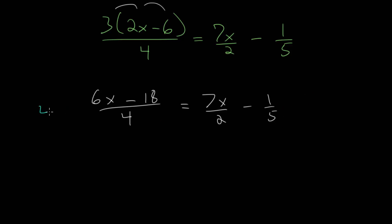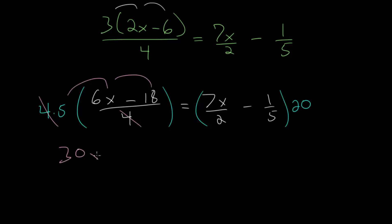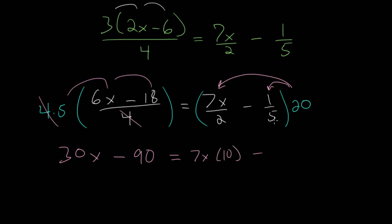So if we multiply both sides by 4 times 5, which is 20, that will cancel every fraction. On the left-hand side the 4 in the numerator and denominator cancel, and distributing the 5 gives us 30x, and 5 times negative 18 — since 5 times 10 is 50 and 5 times 8 is 40 — gives minus 90. On the right, distributing 20: 20 divided by 2 is 10, so we get 7x times 10, which is 70x; and 20 over 5 is 4, so that term becomes minus 4. Rewriting, the left-hand side becomes 30x minus 90 and the right-hand side becomes 70x minus 4.